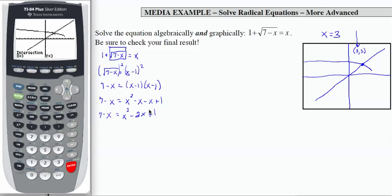So I end up with 7 minus x equals x squared minus 2x plus 1. Looks like I may have a quadratic equation going on here. So what I'm going to do is take the 7 and the negative x and move them over to the right hand side. So I'm going to get x squared minus 2x plus x plus 1 minus 7.